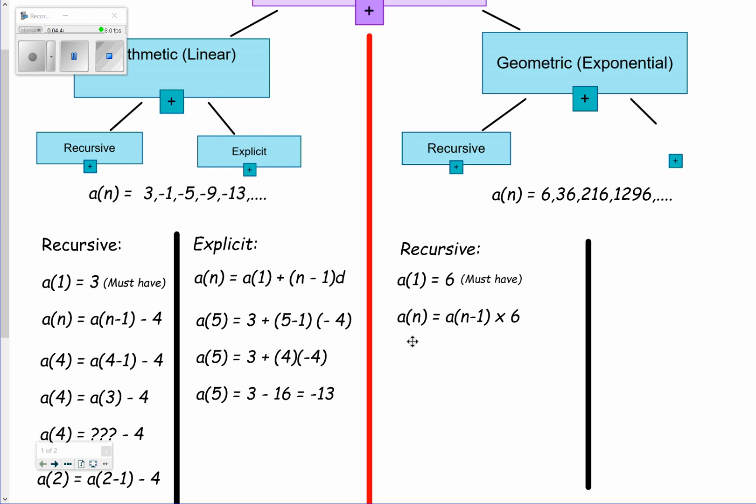Suppose I want the second term. I take this, plug a 2 in for n here, plug a 2 in for n here. So the way I get a second term is take the first term and multiply it by 6. What is 6 times 6? It's 36, and that does in fact give me the second term.